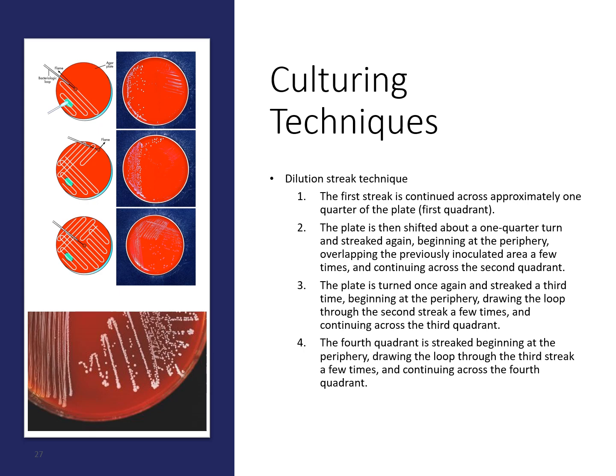Isolated colonies are colonies growing by themselves rather than in large groups. In the images, you can see small individual colonies as well as areas where organisms are grouped together in lines. As you progress through the quadrants, the organisms become thinner and more isolated. In the bottom image, you can see how that first quadrant has all the organisms growing together, while subsequent quadrants show progressively more isolated growth.